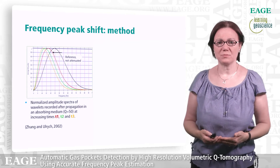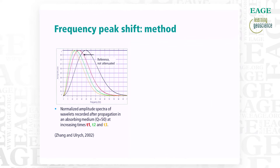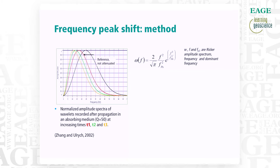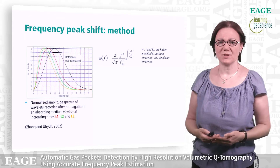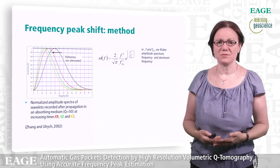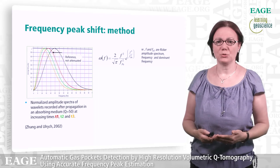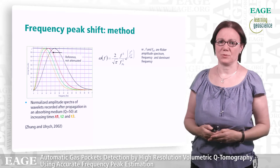As demonstrated by Zhang and Ulrich in 2002, the spectrum of a wavelet propagating in the Earth can be approximated by a Ricker wavelet spectrum. In this example, we have a reference wavelet at time 0 with its associated spectrum in black. This wavelet is propagating in an absorptive medium with Q equal to 50.